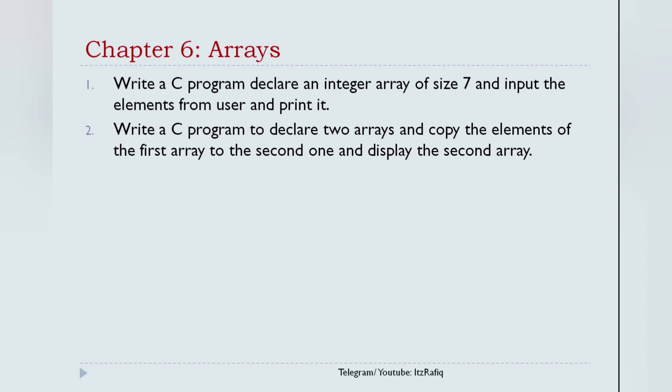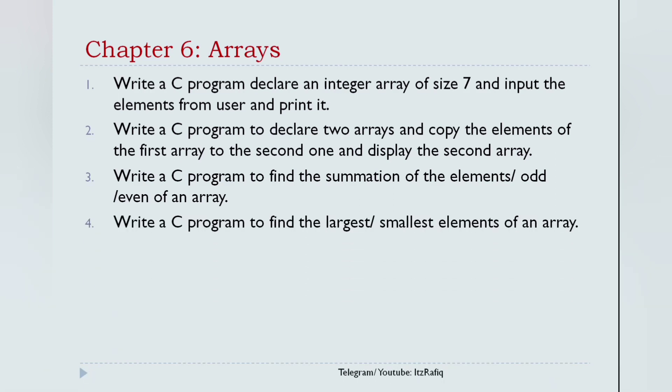Next program: write a C program to declare two arrays and copy the elements of one array to another one and print the second array. Number three, write a C program to find the summation of elements, odd or even elements. Then you will add all the numbers stored inside the array, or you will add only the odd numbers, or only the even numbers. So for all elements, you don't need to write an if part. For odd and even, you will have to write the if part inside the loop. Number four, write a C program to find the largest and smallest elements of an array. We have already done this in our previous videos.